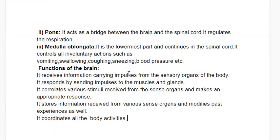In general, the brain receives information-carrying impulses from the sensory organs of the body. It responds by sending impulses to muscles and glands. It correlates various stimuli received from sensory organs and makes an appropriate response. It also stores information received from sensory organs and modifies past experiences.